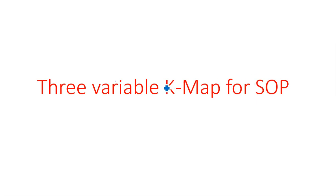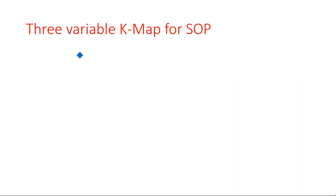In this video I'm going to explain the reduction of boolean expressions having 3 variables using K-map. This is becoming a lengthy video so I am making sum of products as one separate video and POS as a separate video. If you want to reduce the product of sums then you can watch the next video. K-map is used to reduce large boolean expressions.